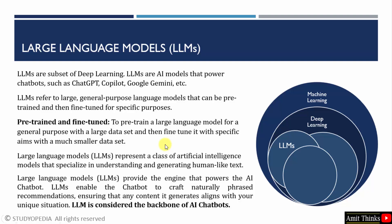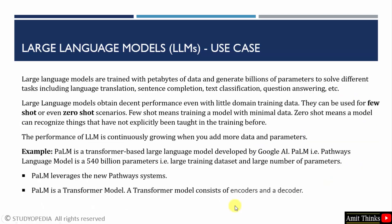LLMs also represent a class of AI models used to understand and generate human-like text, or you can say it provides an engine that powers the AI chatbot. Your AI chatbots are based on these LLMs. These LLMs allow your chatbot to easily create naturally phrased recommendations so that the content is generated by generative AI according to your personalized recommendation. That's why LLMs are considered the backbone of all AI chatbots.